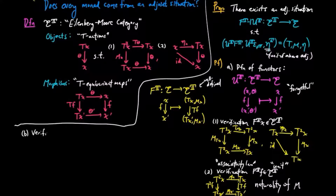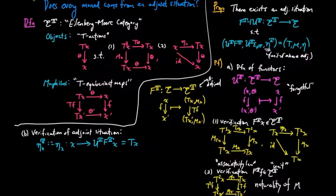Next, we need to verify the adjoint situation. We define the unit of this adjunction to be the unit of our monad. We can do this because the composition U^t ∘ F^t is equal to t, since the free functor F^t takes x to (tx, mu_x) and the forgetful functor forgets the multiplication action. So this is a well-defined natural transformation.